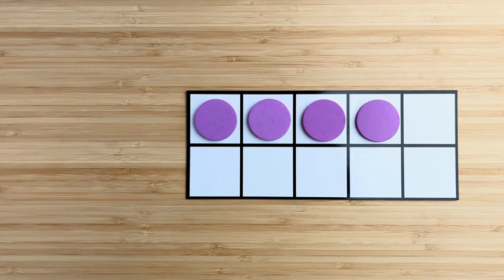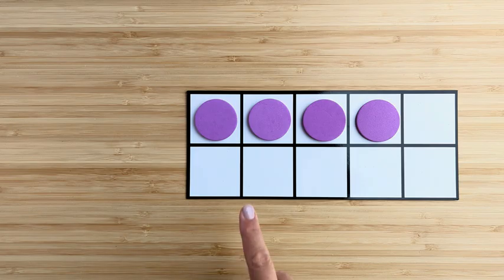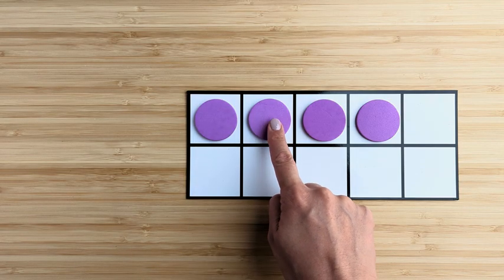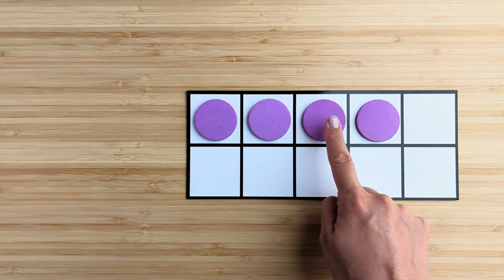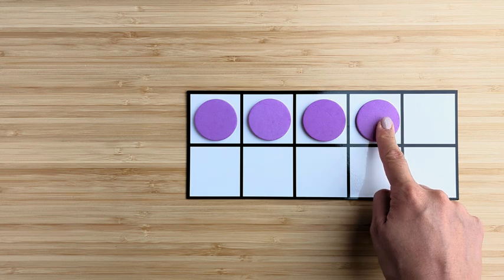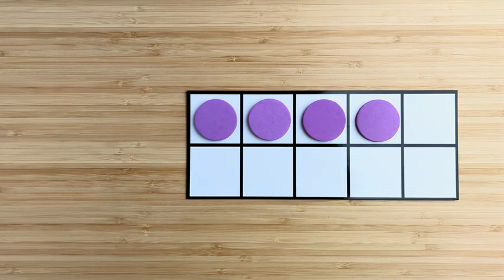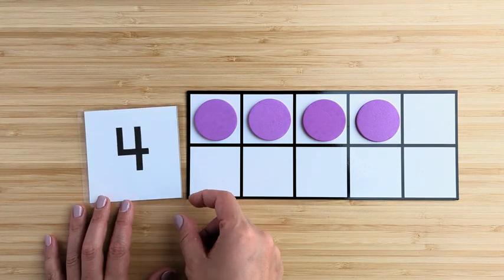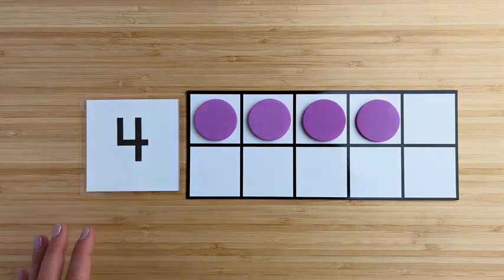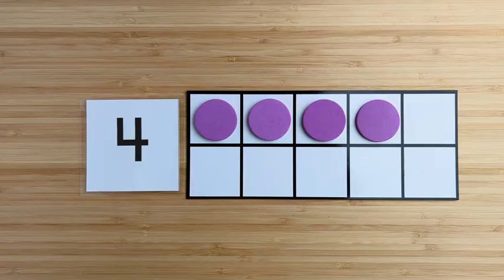How many in all? Point and count. One, two, three, four. Four. There are four purple circles.